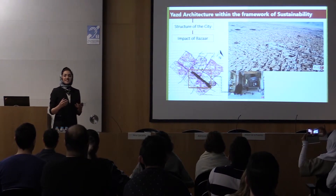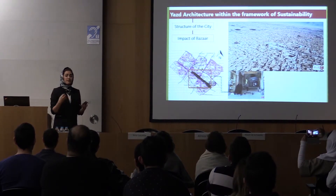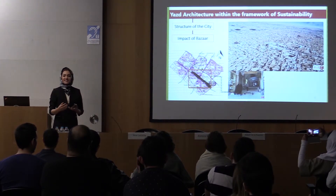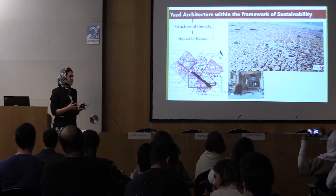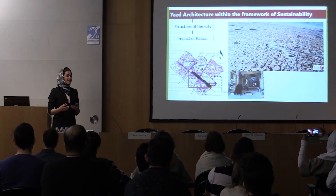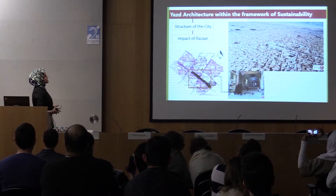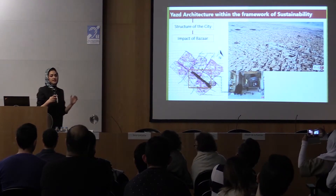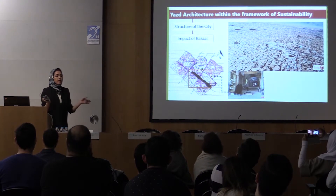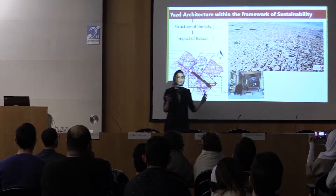The bazaar in Iran is a kind of market, but not like markets in Europe. It's not just for buying and selling — it's also a place for social communication. People go there to see each other, talk, and share everyday life. The city grows and spreads over the bazaar, and all roads and streets spread from the main bazaar.